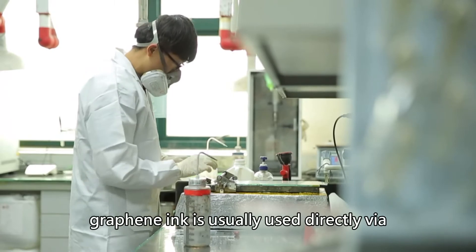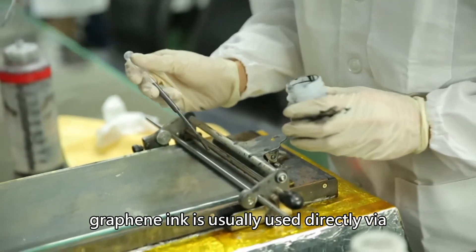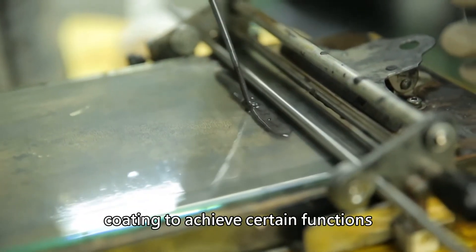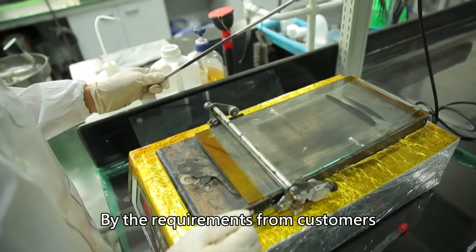Unlike graphene suspension, graphene ink is usually used directly via coating to achieve certain functions. By the requirements from customers,